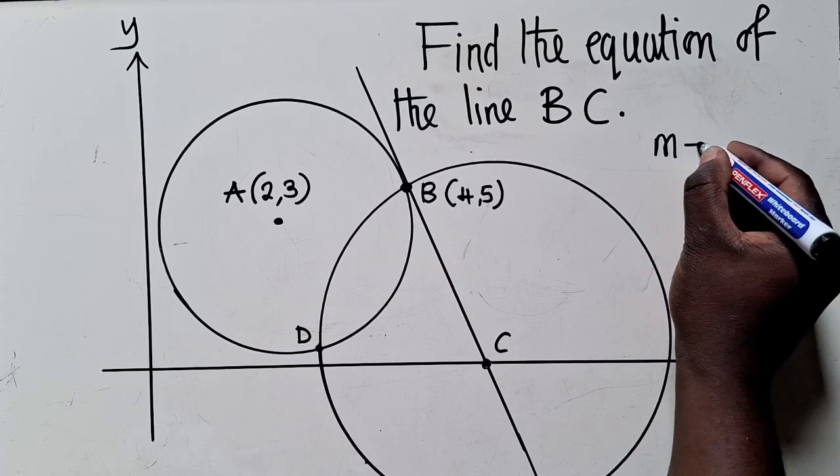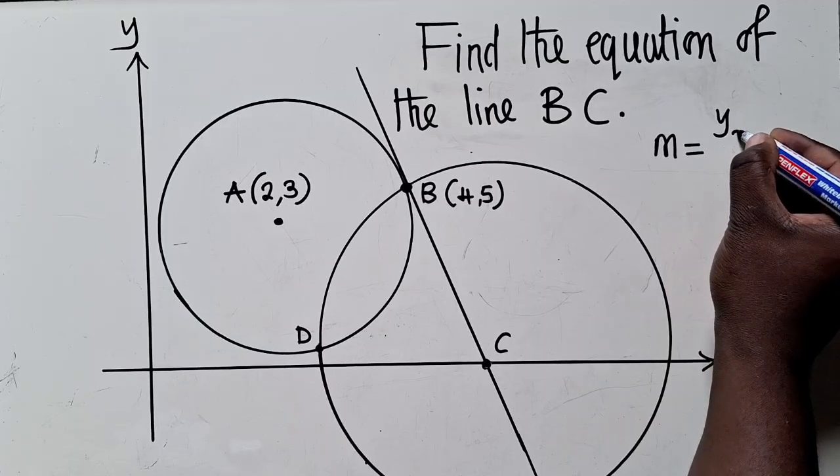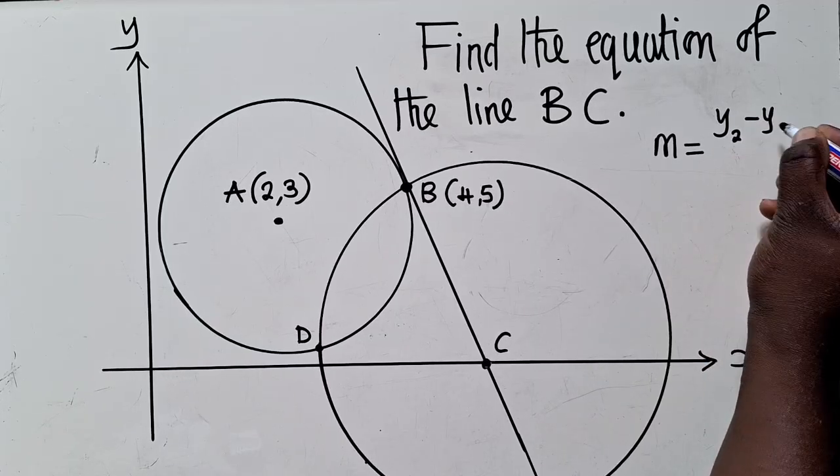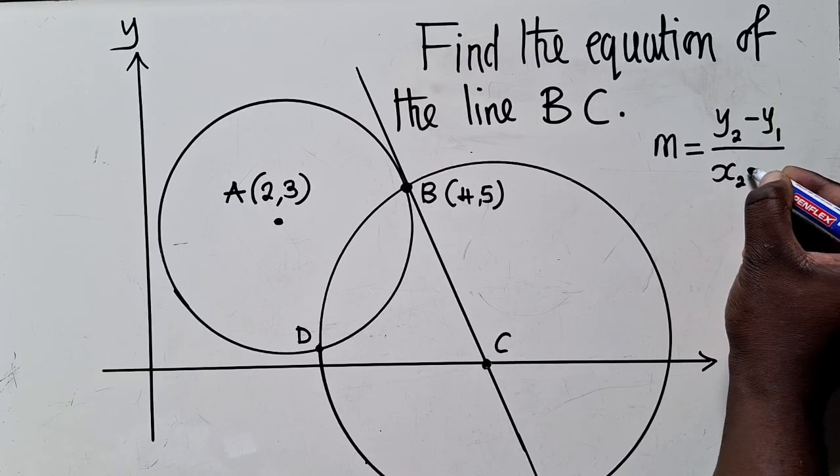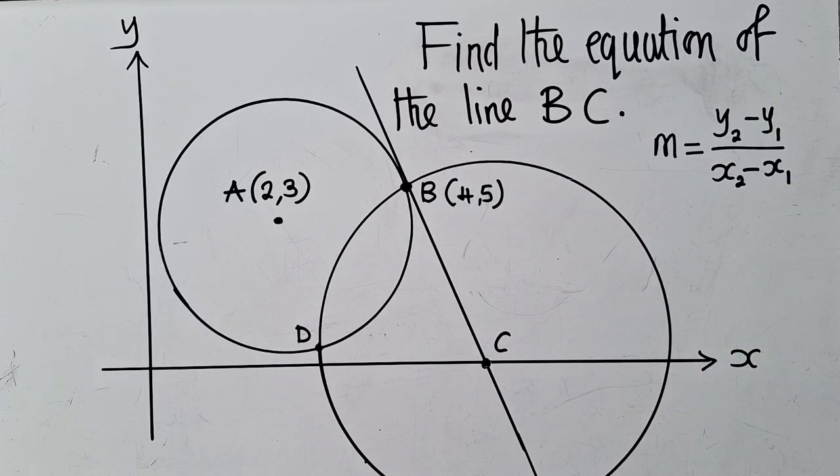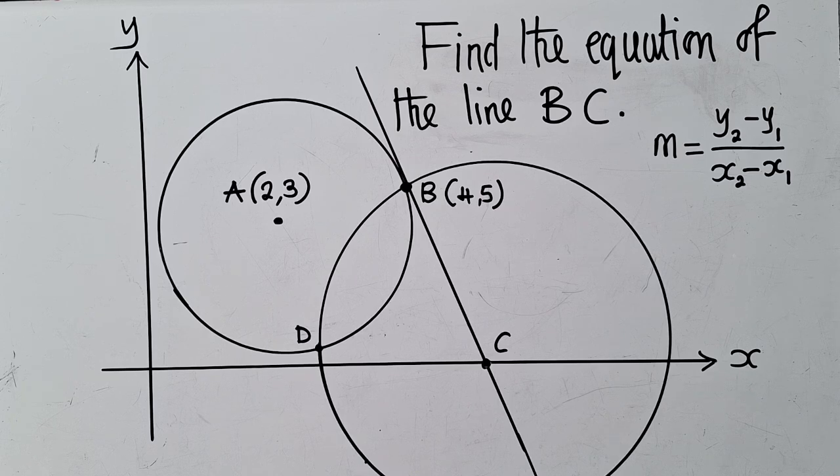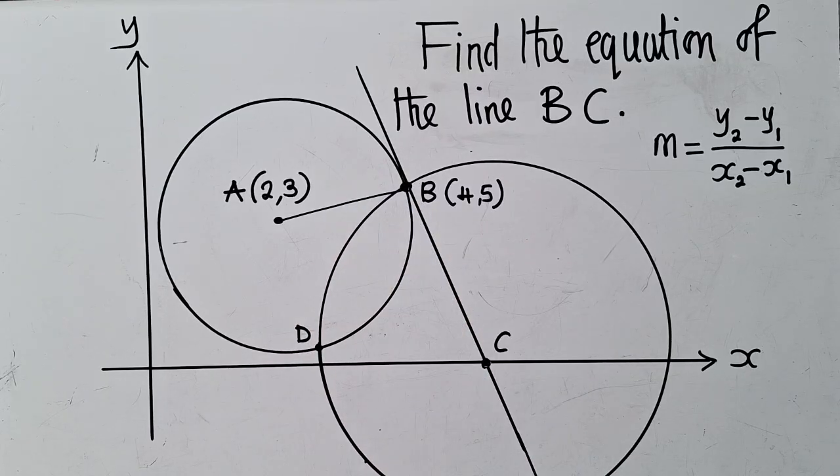This gradient has got a formula, which is M is equal to Y subscript 2 minus Y subscript 1 over X subscript 2 minus X subscript 1. We'll use this formula to find the gradient of this line right here.